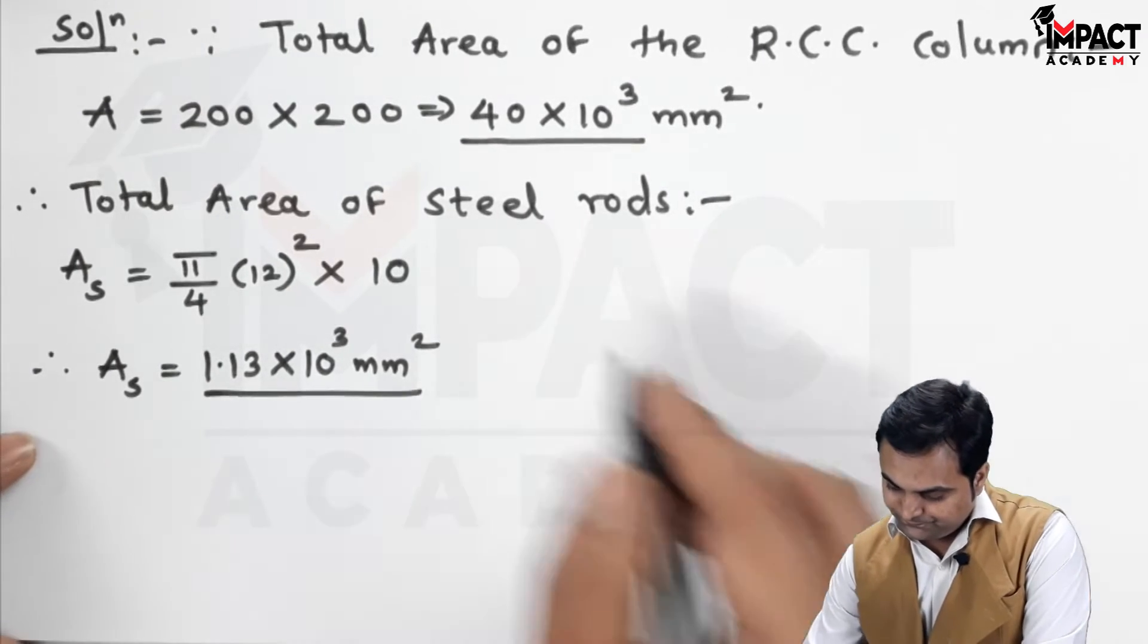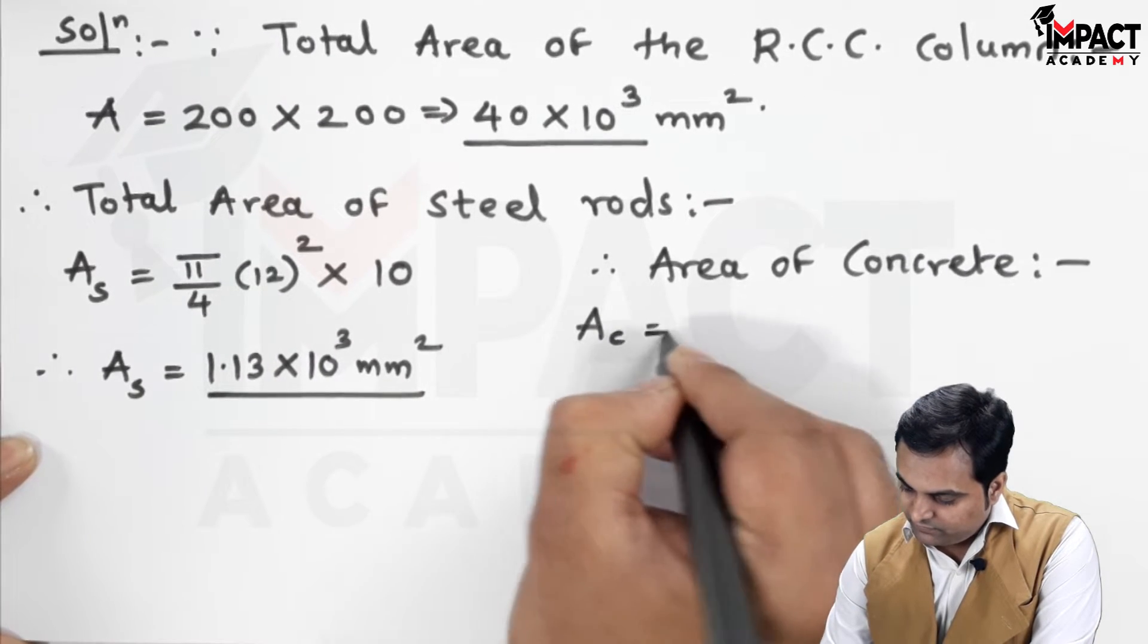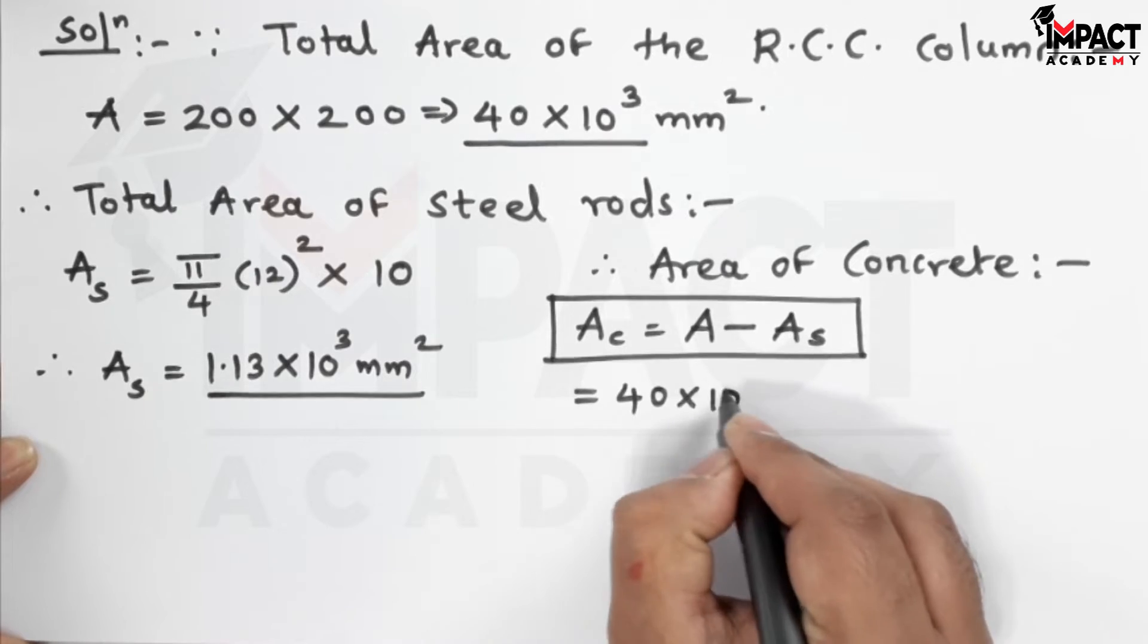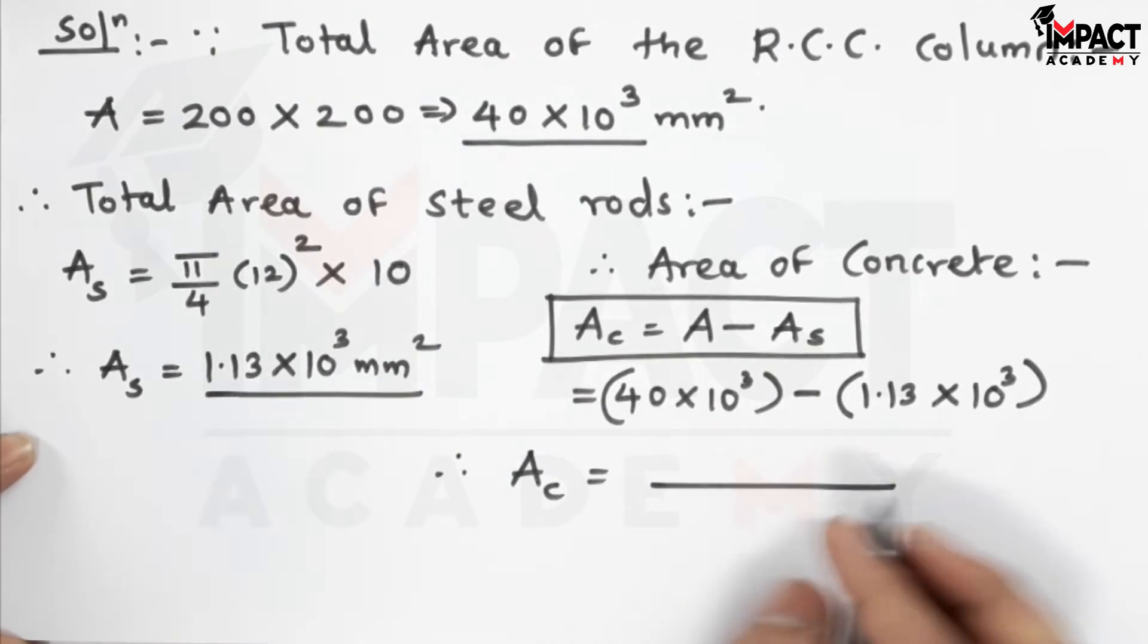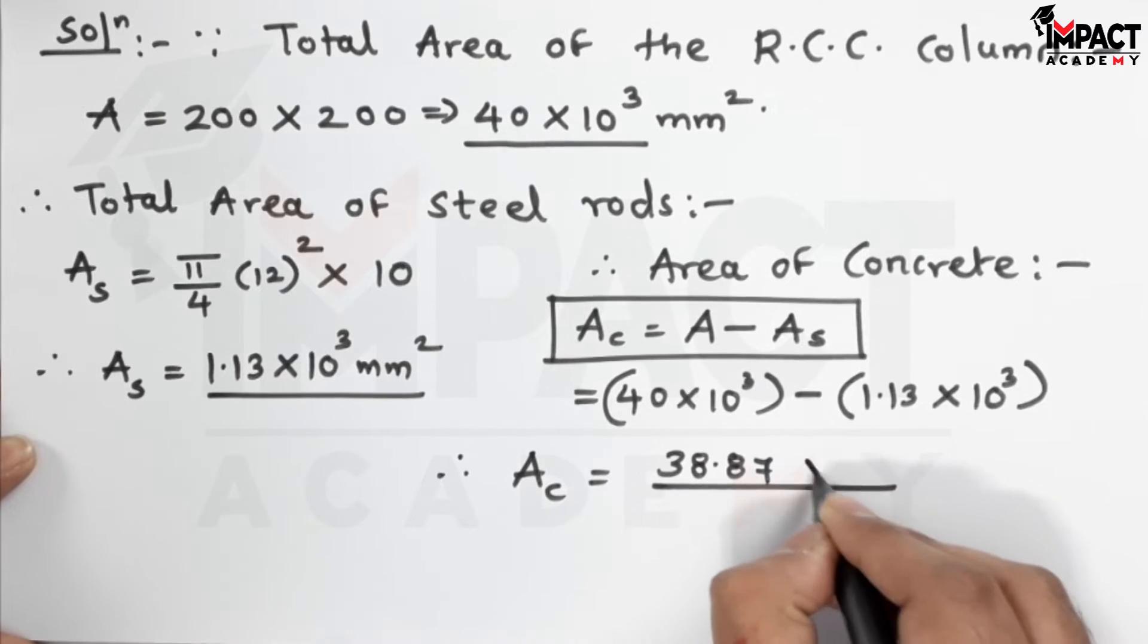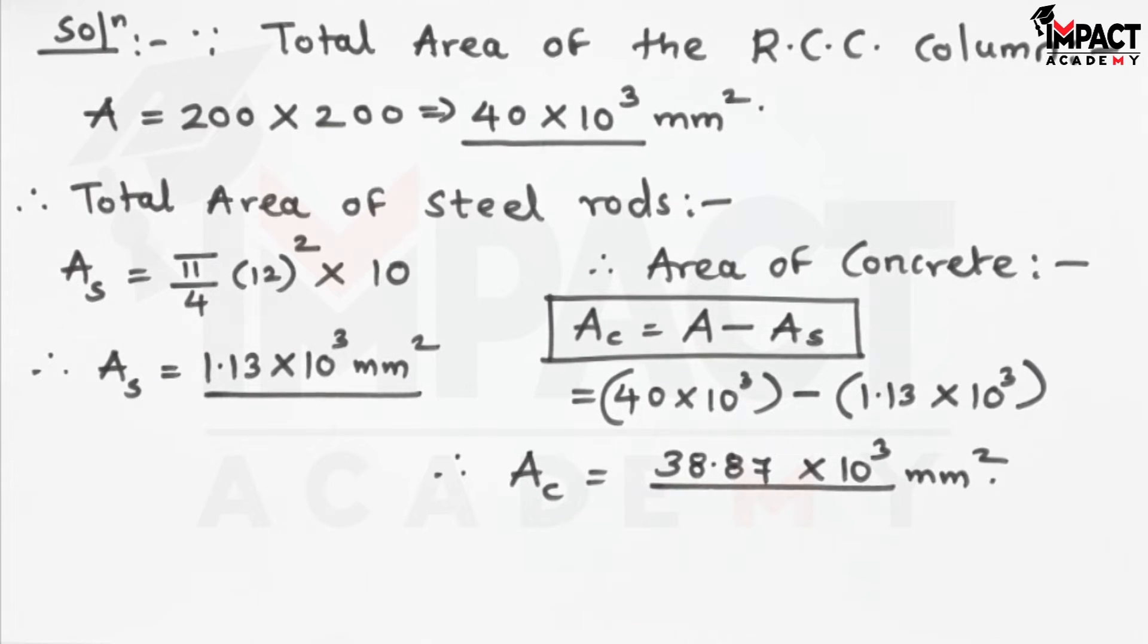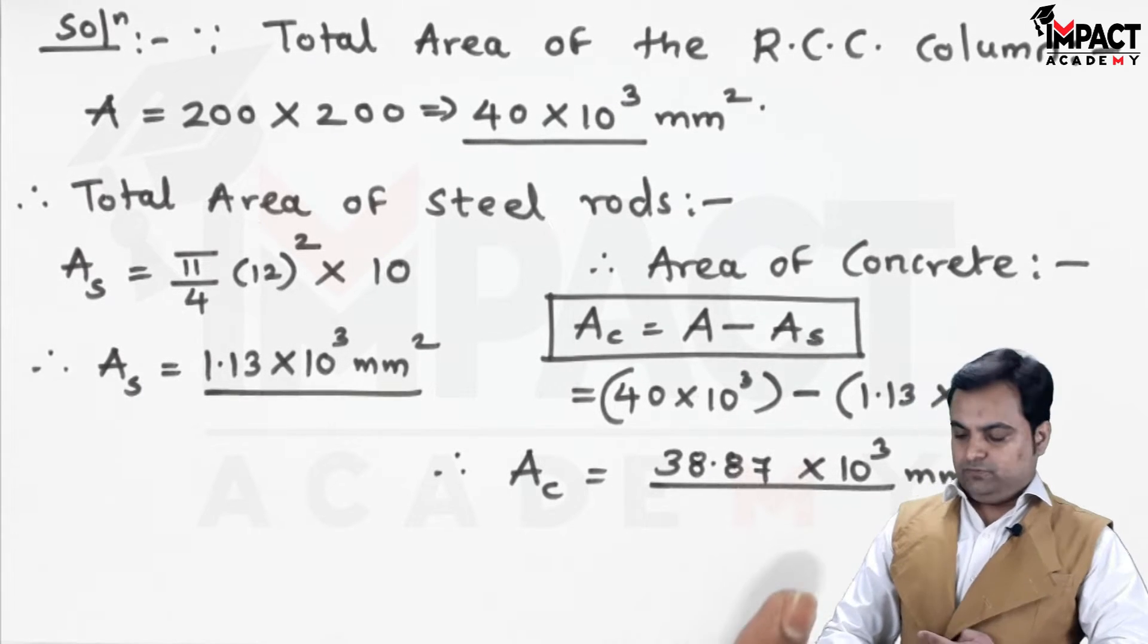The area is from the total we have to subtract the area of steel rod. That would give us the area of the concrete. So, therefore, A suffix C equals capital A minus the area of steel. And, the value is 38.87 into 10 raise to 3 mm square. So, in the further part of the problem, when we are going to calculate the area of steel, we are going to use this area. And, for area of concrete, we are going to use this value.